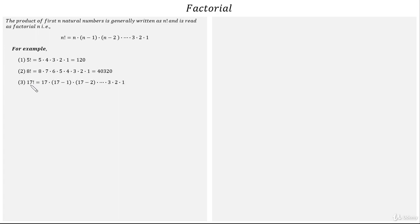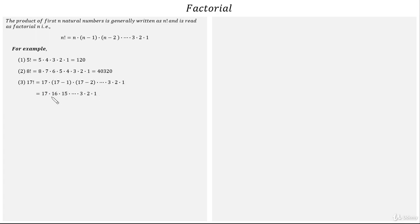Similarly, factorial 17 can be written as the product of the first 17 natural numbers, that is 17 into (17-1) into (17-2) till 3 into 2 into 1, which is 17 into 16 into 15 till 3 into 2 into 1. This product is very large, so we are keeping it as it is and not writing out the entire product.